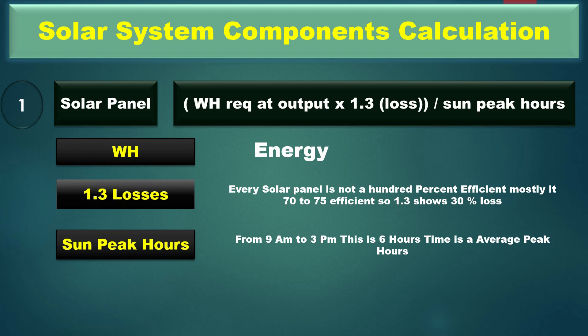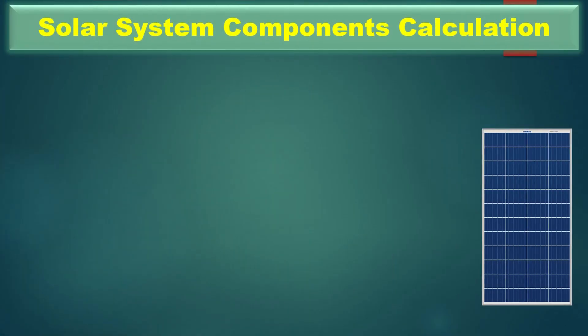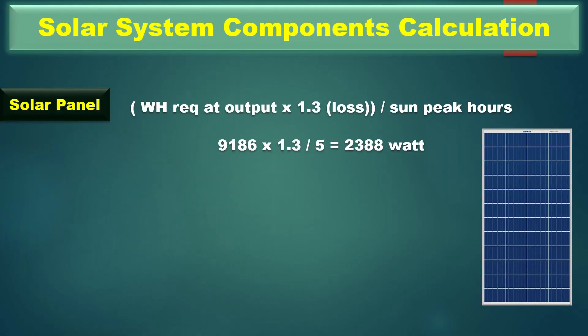Sun peak hours means from 9 a.m. to 3 p.m. This 6-hour window is the average peak hour period every year, but we can also use 5 hours due to sun intensity variations. Putting the values into the solar formula: 9186 multiplied by 1.3, divided by 5 — the answer is 2388 watts.